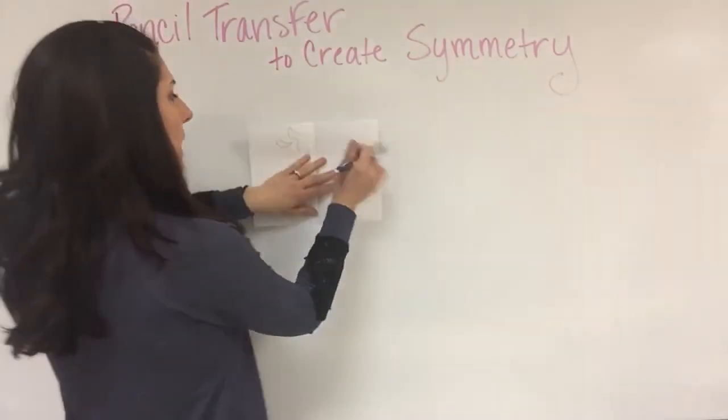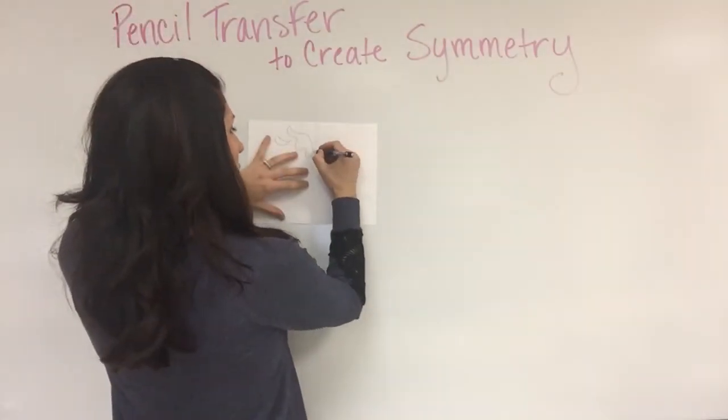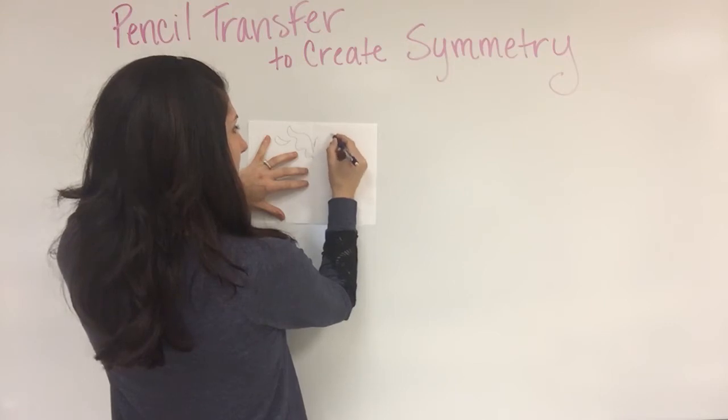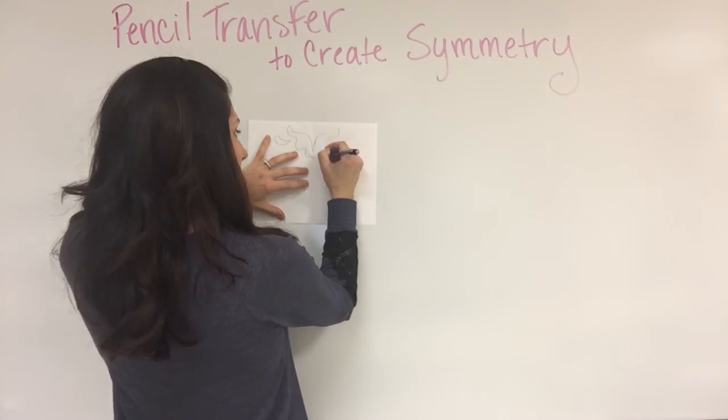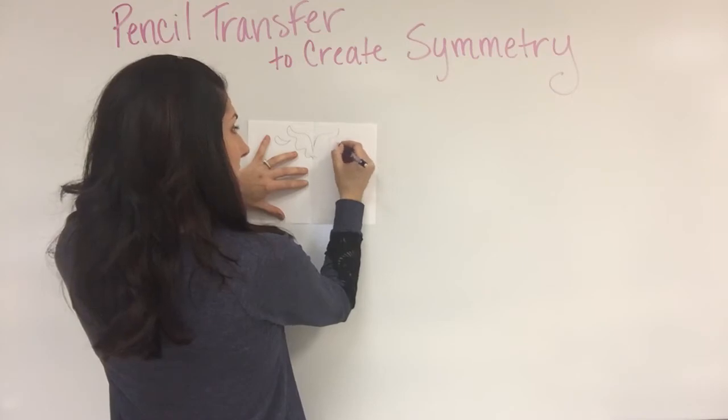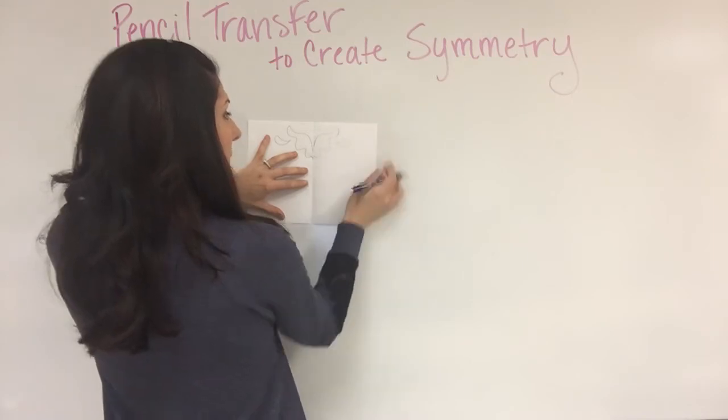Once you have your design traced well enough, just go ahead and trace it in with a pencil so you can see that beautiful symmetrical design on the opposite side. I'm doing a quick job, but you can do this with very intricate designs. This looks a lot cooler if you have a very detailed design.